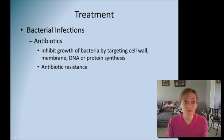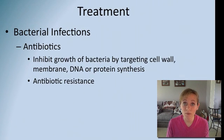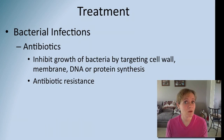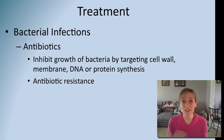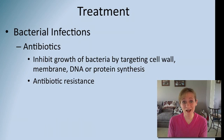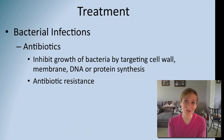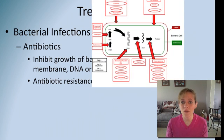For treatment of bacterial infections, you can simply take an antibiotic. An antibiotic is going to inhibit the growth of bacteria by targeting various cellular components like the cell wall, the cell membrane, DNA synthesis, or protein synthesis. But remember, from the evolution unit, we talked about the threat of antibiotic resistance. If you take antibiotics when you really don't have a bacterial infection — say you just have the cold or the flu — the antibiotic is not going to work, and you're going to actually cause antibiotic resistance. There might be bacteria in you that are resistant, and you're just selecting for those through natural selection. Those survive, reproduce, and cause more resistant bacteria.